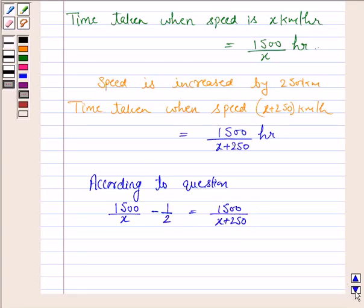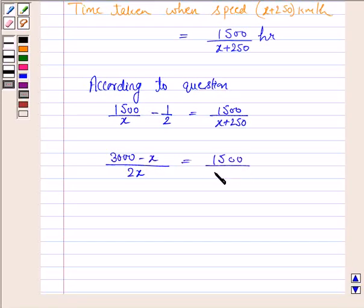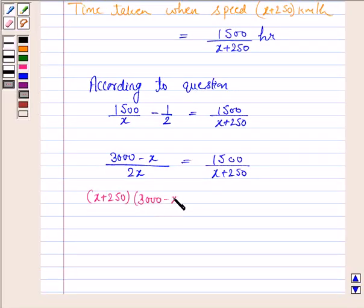Now taking LCM — here we have LCM as 2x and we multiply 2 with 1500. So we have 3000 minus x is equal to 1500 upon x plus 250. Cross multiplying, we have x plus 250 into 3000 minus x is equal to 1500 into 2x, which is 3000x.